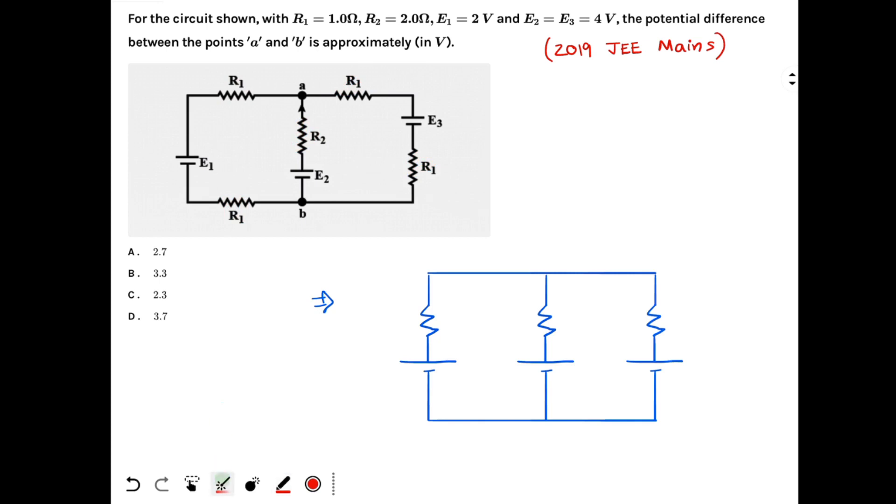Now what I have done - I have the three EMFs over here, so I can write down E1, E2, E3. Then I have these two resistors in a single branch, so they are in series. I can directly add them, so this is actually 2R1 because this is R1 and this is R1. Then here we have R2, and finally R1 and R1 again in series, so we get again 2R1.